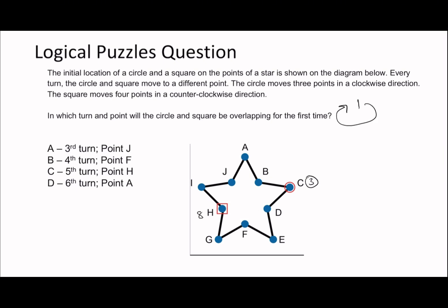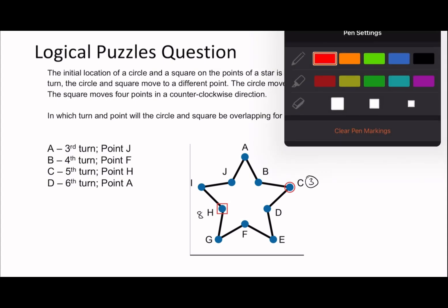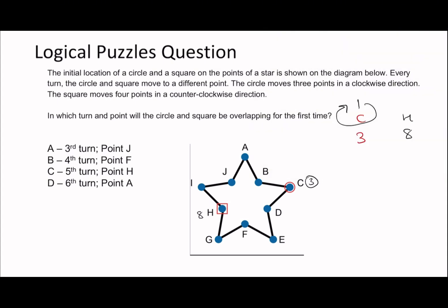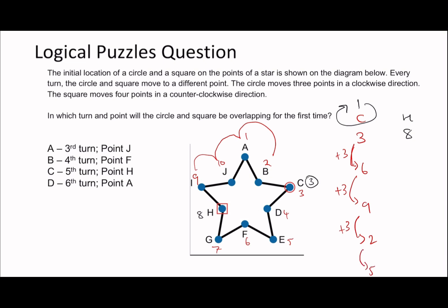C starts at position three and moves plus three each turn: 3, 6, 9, then wrapping gives 2, 5, 8... For H, starting at position eight moving plus six each turn: 8, 4, 10, 6, 2, 8. When you exceed 10, you wrap around — so 8 plus 6 is 14, which wraps back to 4, and so on.